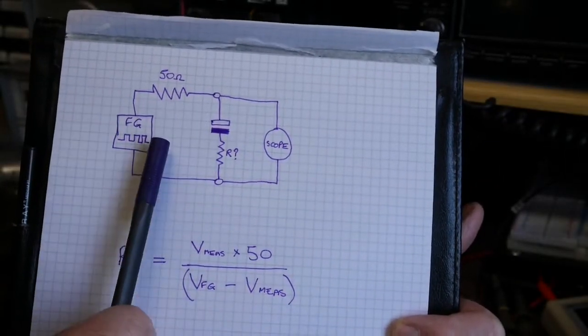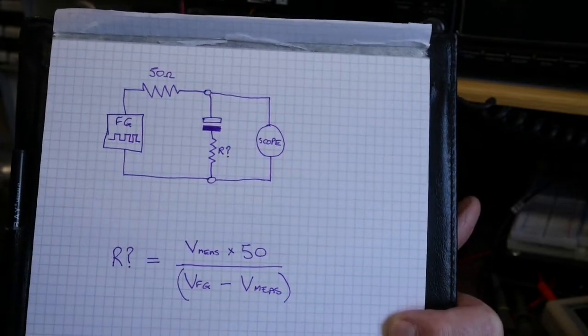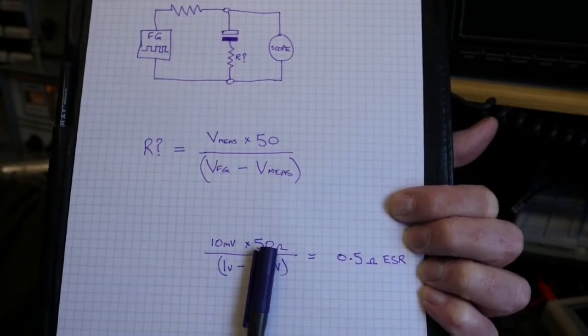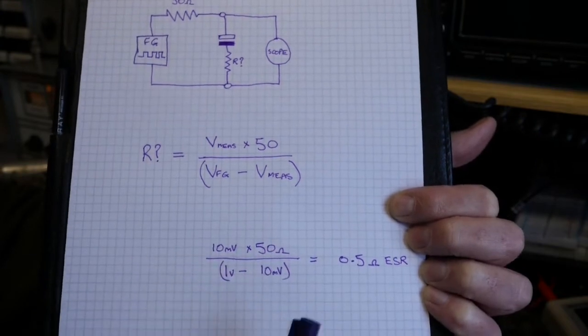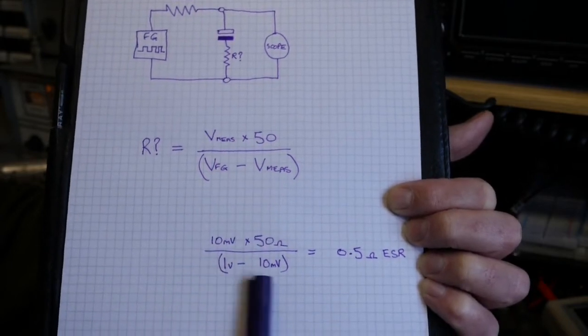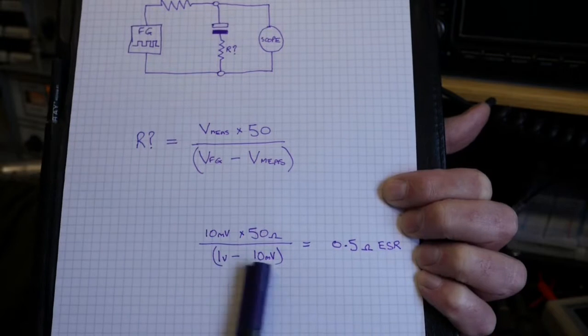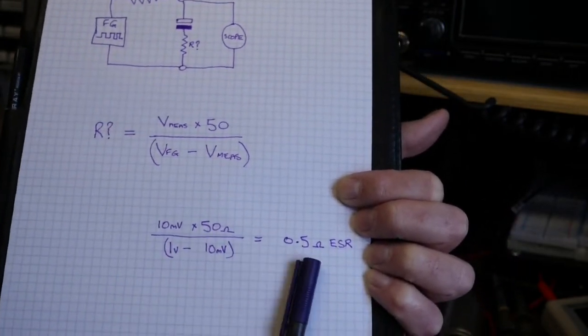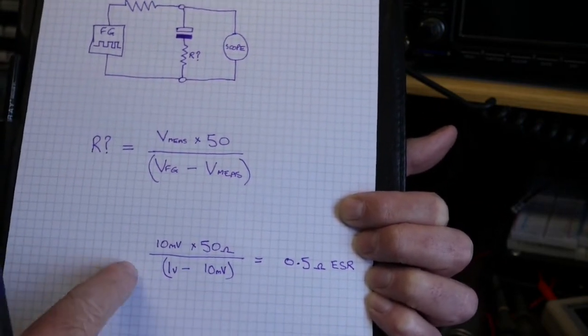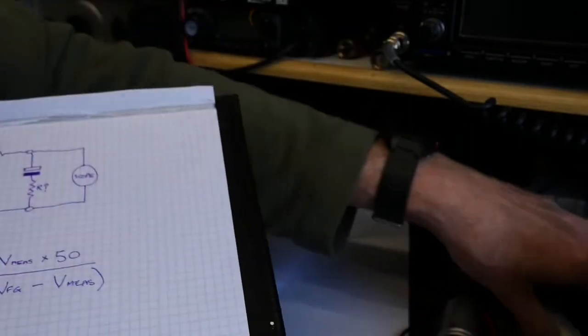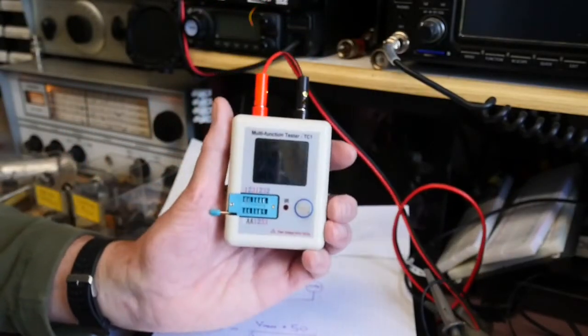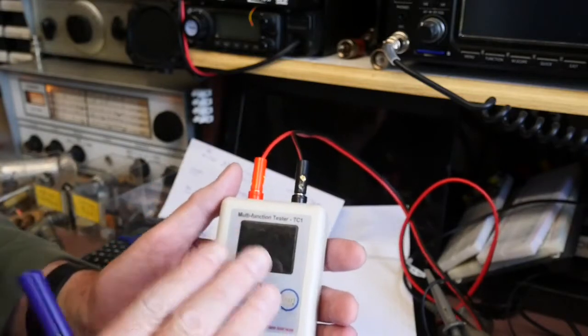Recall the circuit diagram and formula. Plugging the numbers in, we had a difference of about 10 millivolts, 50 ohms is the output impedance of the signal generator, and on the bottom it's the total output voltage minus the measured voltage, so that's one volt minus 10 millivolts. When we do the math, we get 0.5 ohms, and that should be the equivalent series resistance of that capacitor.